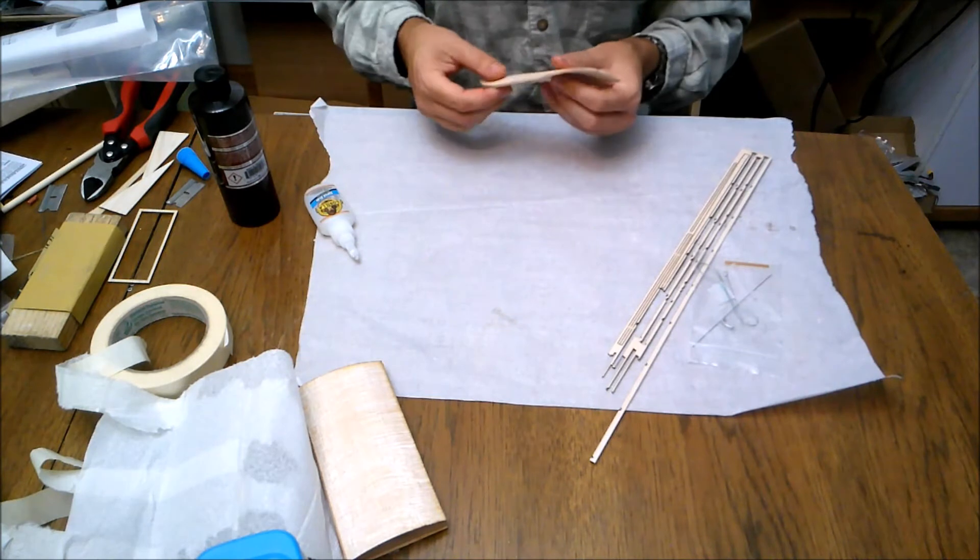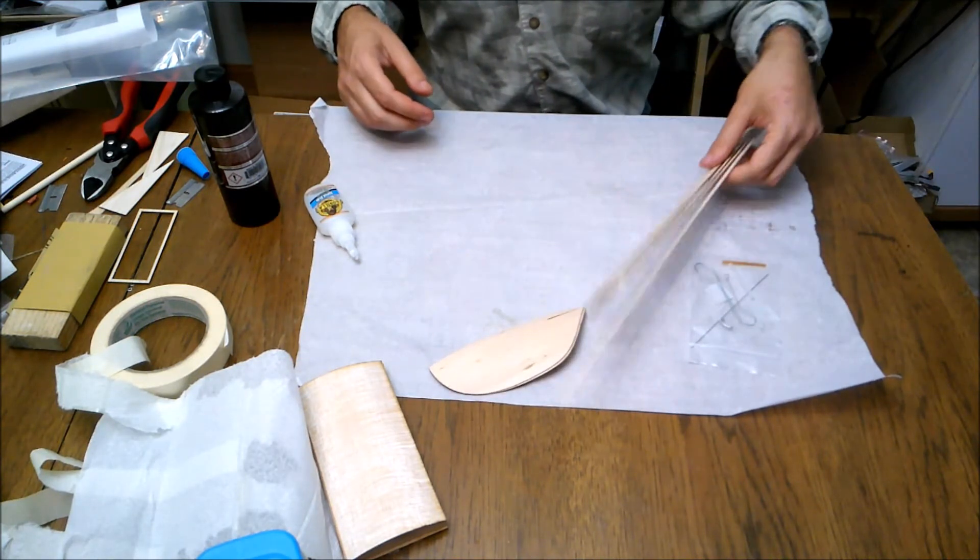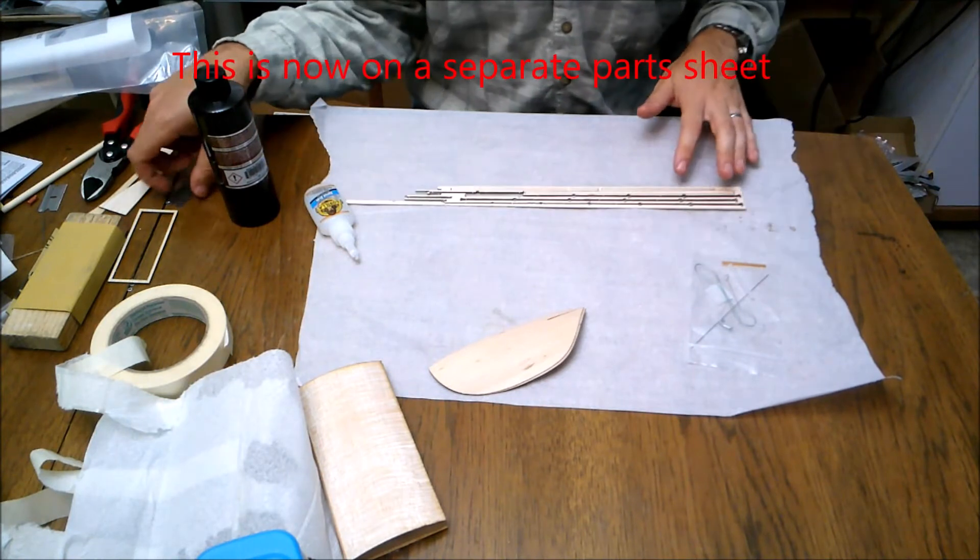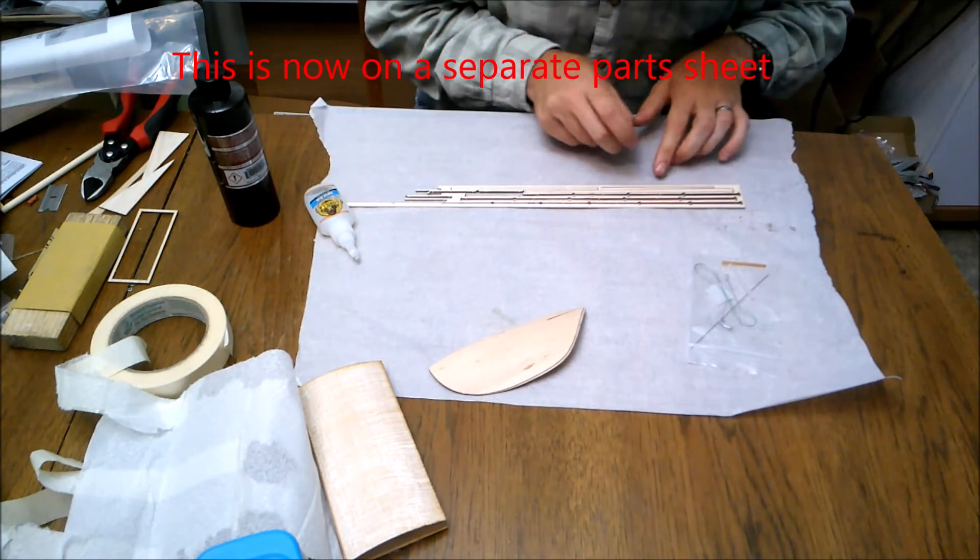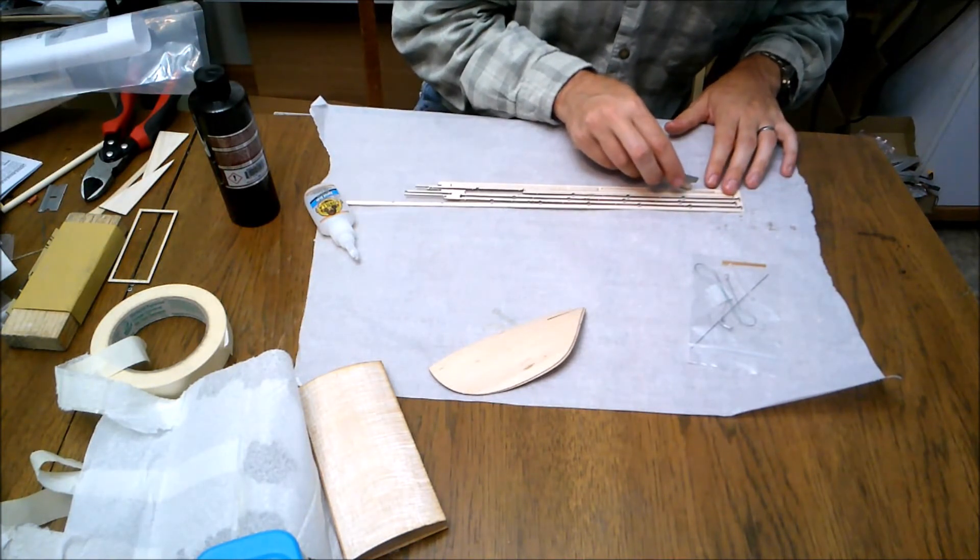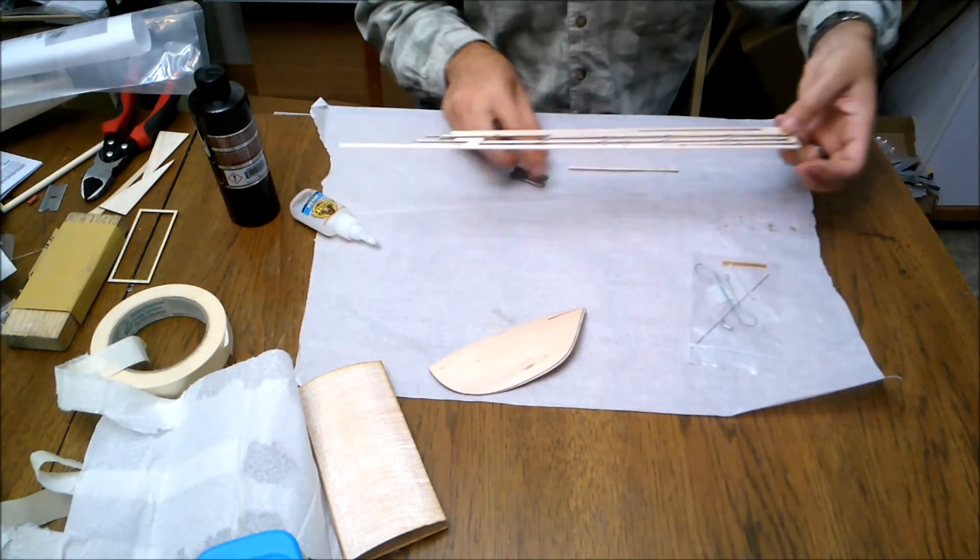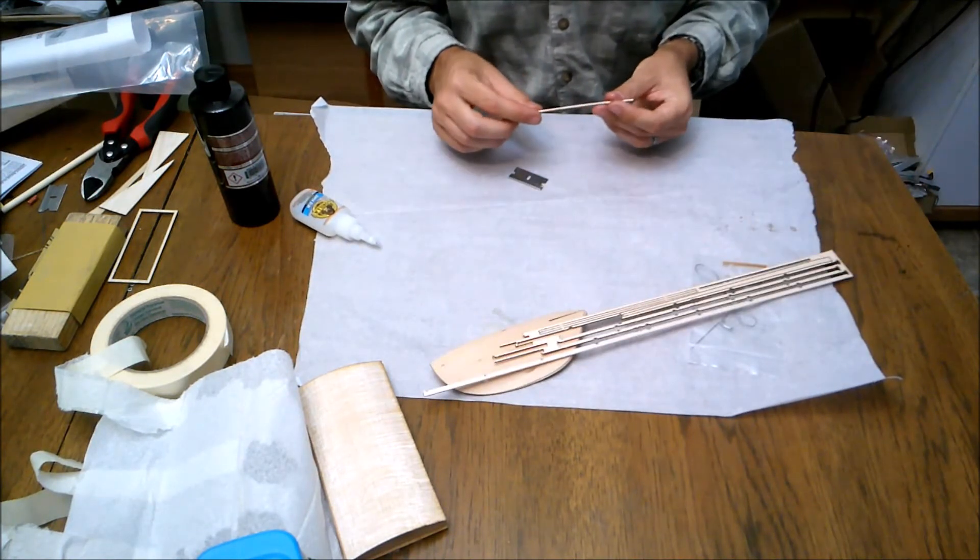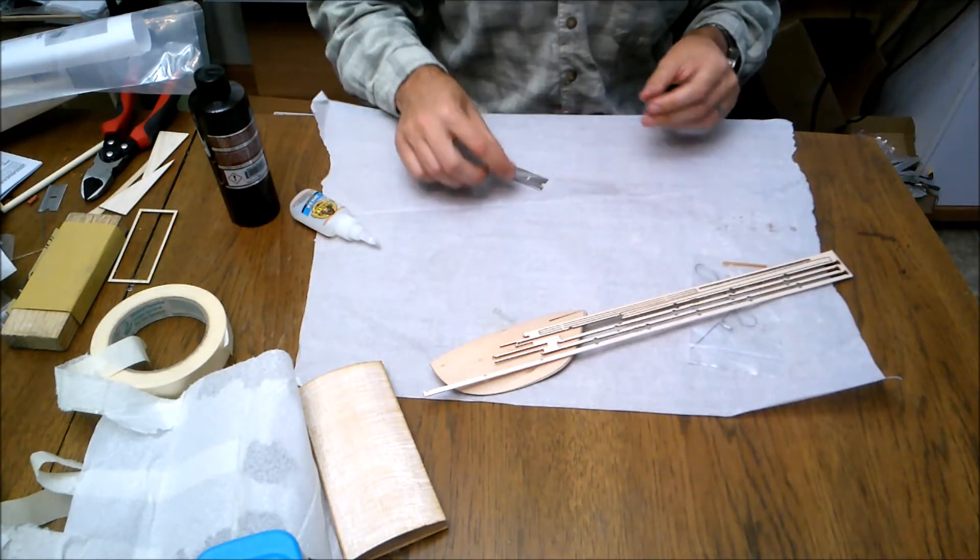And again you can sand the edges and what not if you want to. And we'll go ahead and pop this propeller spar out. It's the part that's got this little kind of dot in the middle of it. It's just a stick of wood.